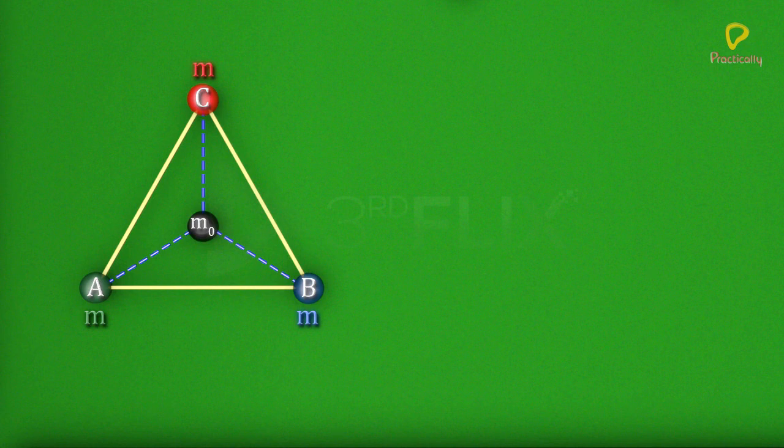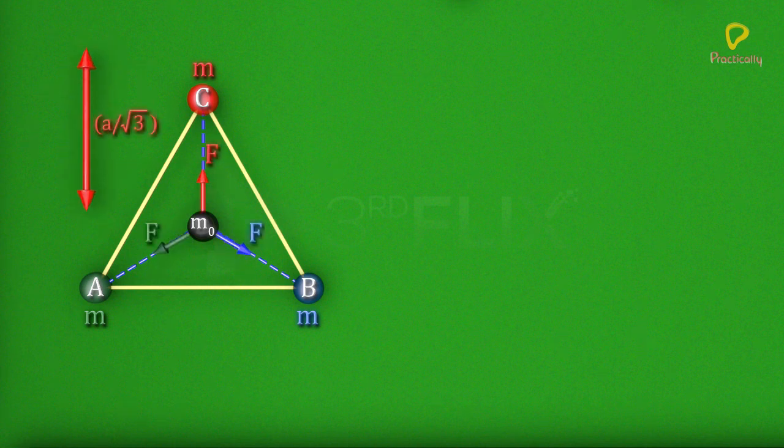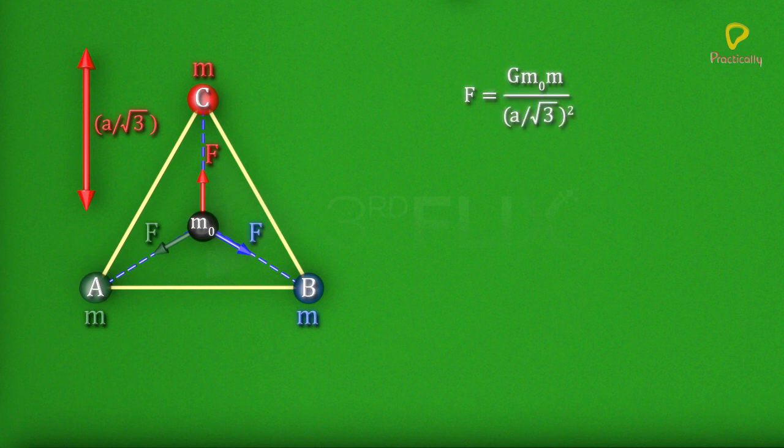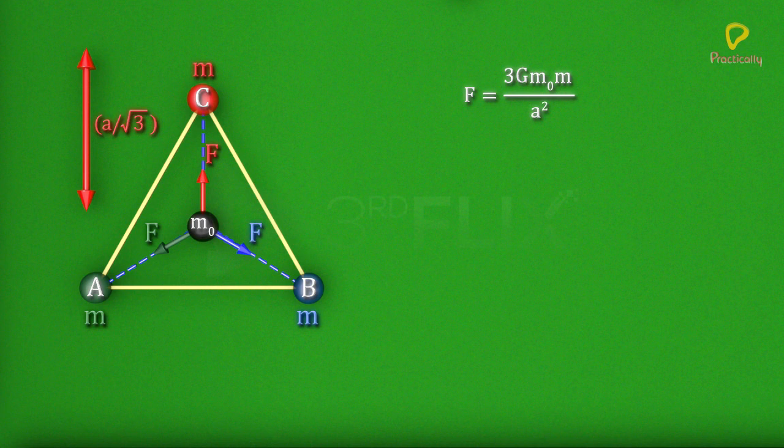We also know from the properties of triangles that the distance of the centroid from any of its vertices is a by root 3. Thus the magnitude of the gravitational force on M not due to any mass M is G M not M by a by root 3 the whole square. Thus f equals to 3 G M not M by a square.